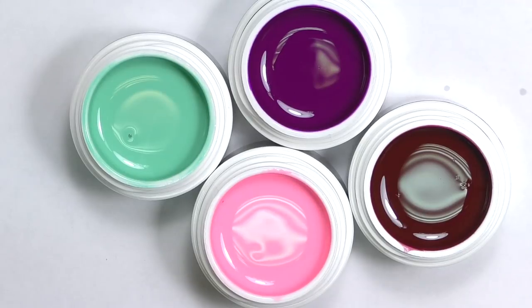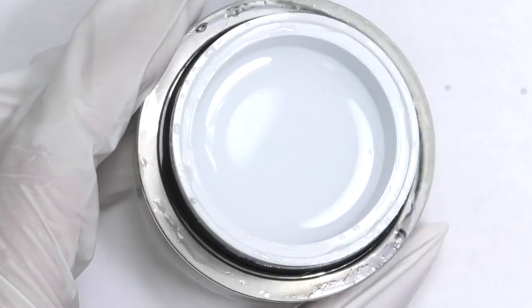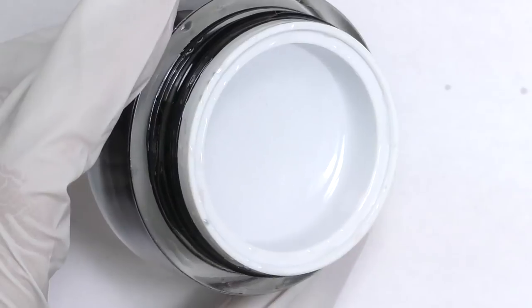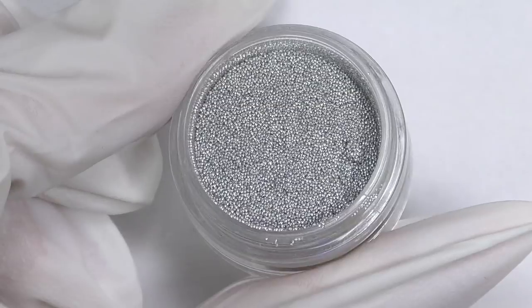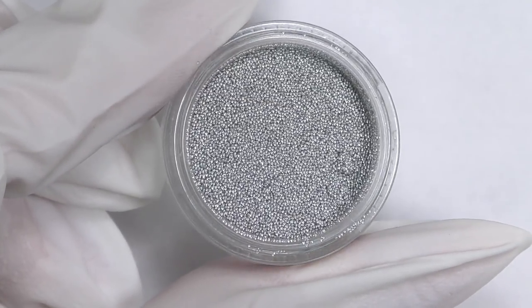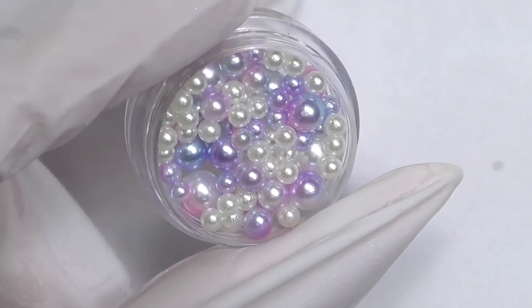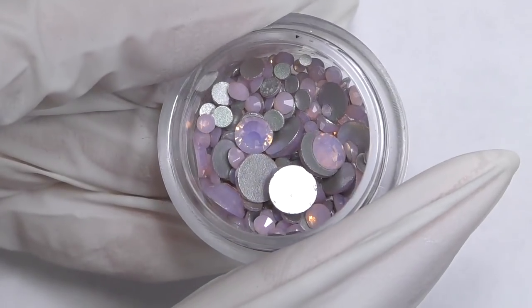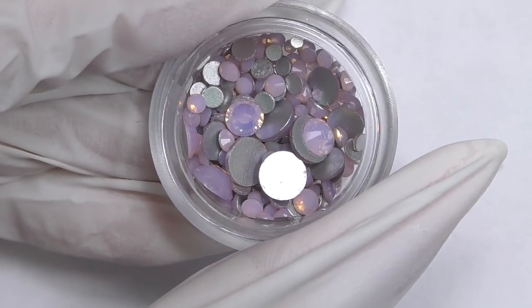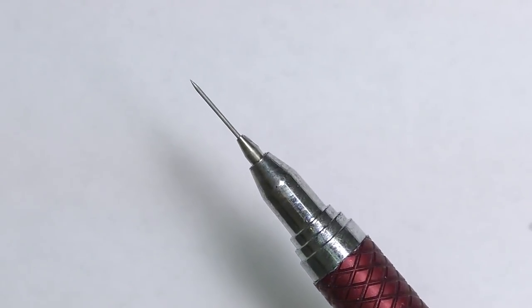To create this look we will need color gel paints or gels, clear builder gel medium consistency, thick gel to secure the design, I'm using accents bling on, small silver caviar beads, plastic pearls and rose opal rhinestones.